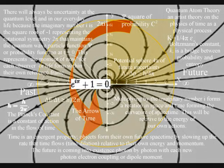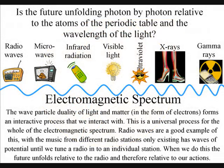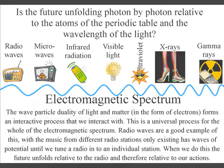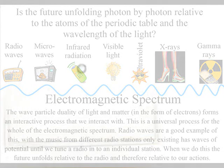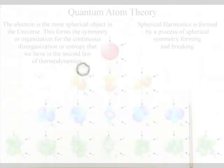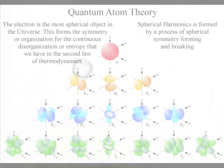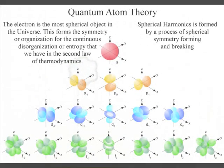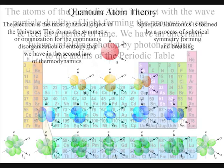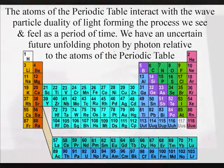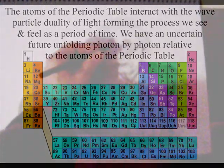The great paradox of wave-particle duality can be explained in this theory. Light and matter, in the form of electrons, are waves, and only have particle characteristics when they interact relative to the atoms of the periodic table. The future is unfolding relative to the atoms of the periodic table, and therefore relative to our own actions.